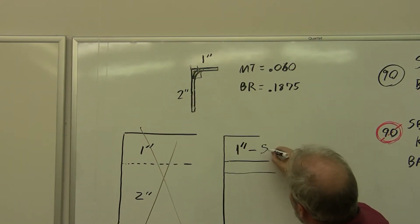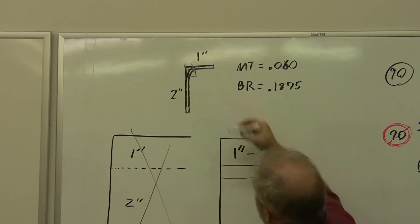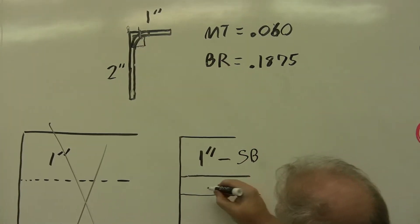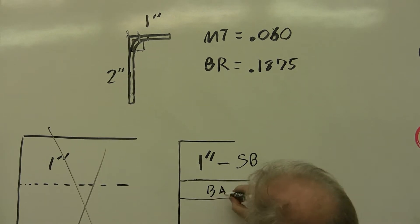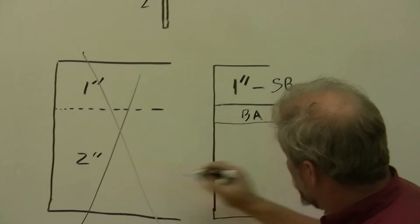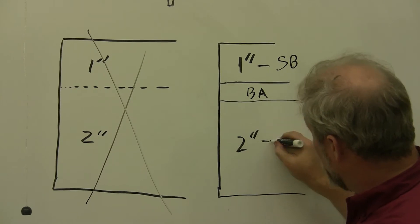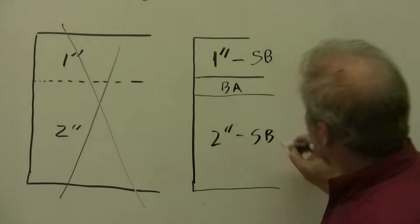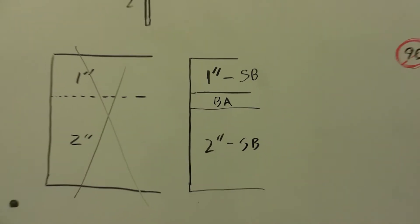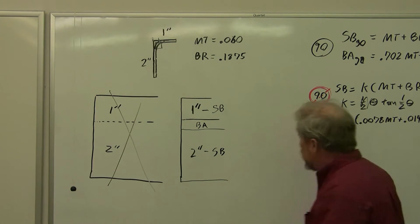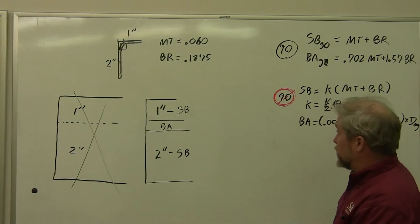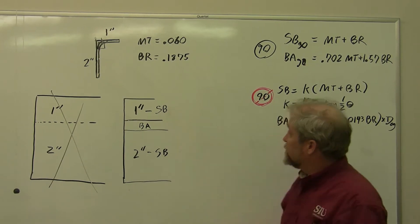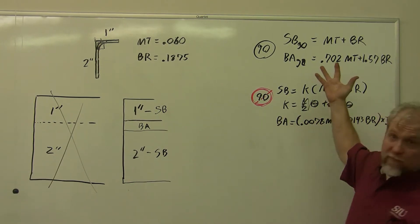So 1 inch minus our setback. This flat is going to be the distance from here sweeping around the corner over to here. That's just our bend allowance. And this piece is going to be 2 inches wide minus the amount that we lost here, the setback. And so now we're going to try and put some numbers into this. Now the good news is we have formulas that allow us to calculate the numbers. So we need to calculate the setback and the bend allowance so we can substitute everything into here.